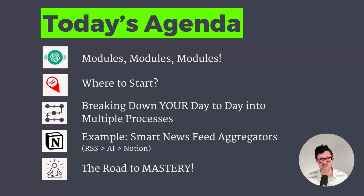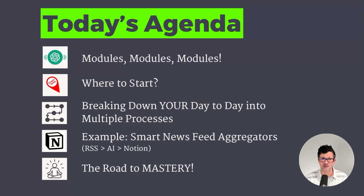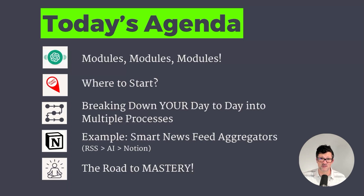We're starting with modules. Understanding these is core to understanding how Make.com works. I'm going to give you some tips on where to start and how to break down your day into multiple processes so you can begin to think about how best to automate all the things that you do. This is a smart news feed aggregator chaining together RSS feeds, AI, and Notion. And then we're going to get into the road to mastery — how you can really go to the next level and master Make.com and automate things not only in AI, but that interact with all the different software that you use on a day-to-day basis.